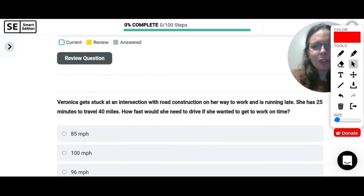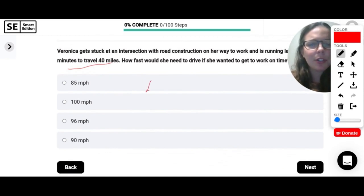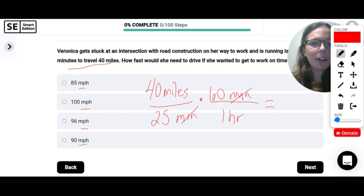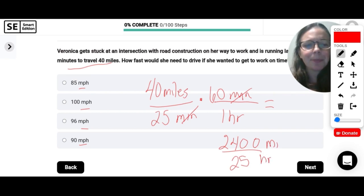Veronica gets stuck at an intersection with road construction on her way to work and is running late. She has 25 minutes to travel 40 miles. How fast would she need to drive if she wanted to get to work on time? So I'm going to set up a little ratio here. We know she has to go 40 miles in 25 minutes. So that would be miles per minute, which, all of our answers are in miles per hour. That's how we describe speed, right? So I need to change the units of this to miles per hour. So I'm going to multiply by the 60 minutes that are in one hour. I know to put the 60 minutes on top because what I want is for these to cancel out. So that's a little trick there to know which one goes on the top, which one goes on the bottom. So now I can just multiply across the top and the bottom. So I will get 2,400 over 25 and notice how we have miles over hours. So that's miles per hour. So when I divide, I get 96 miles per hour.